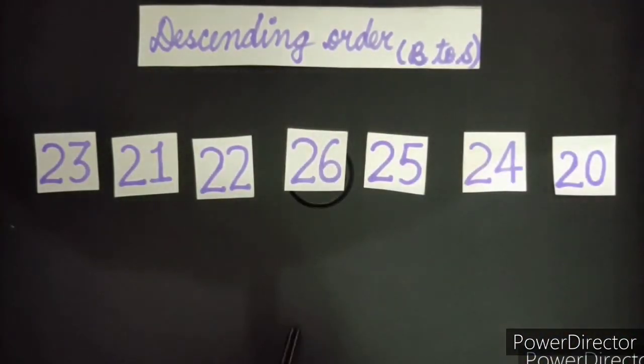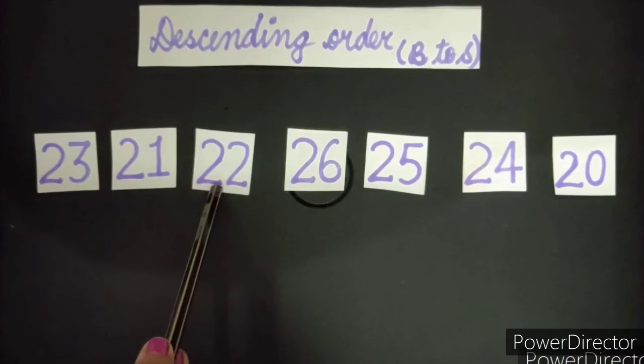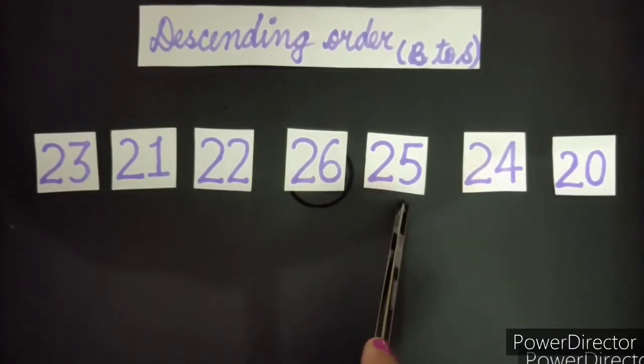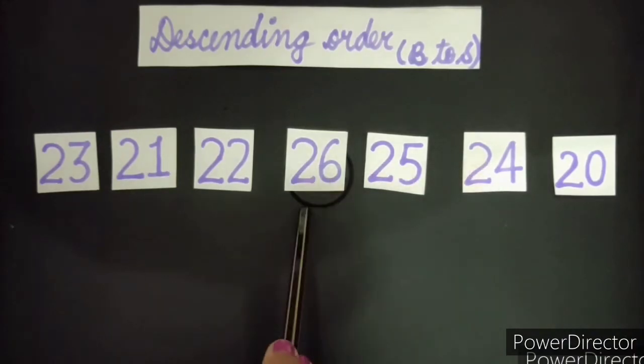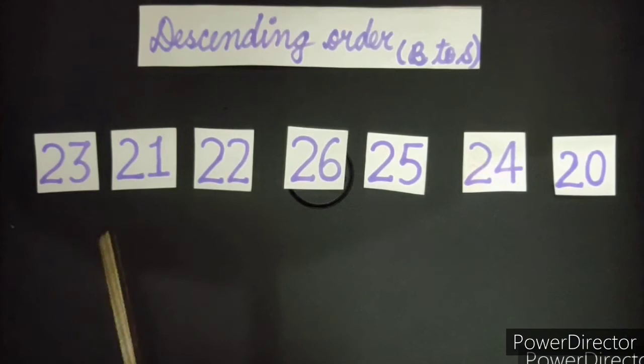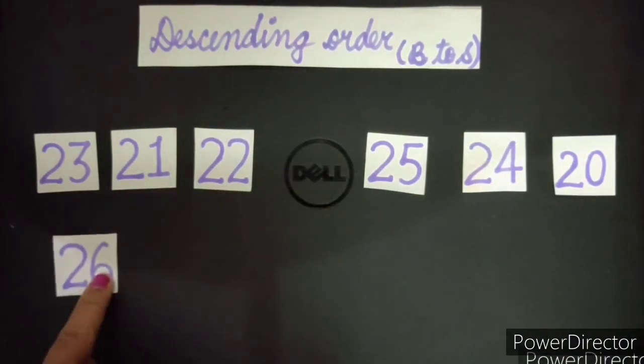Now let's find out the biggest among all these. Sapseed bada number. 23 is 23 biggest. Let's see. 21, 22, 26. No, 23 is not biggest. 25. 26 is greater than 25. 24. 26 is greater than 24. 20. Here 26 is greater among all these. Let's bring it down.